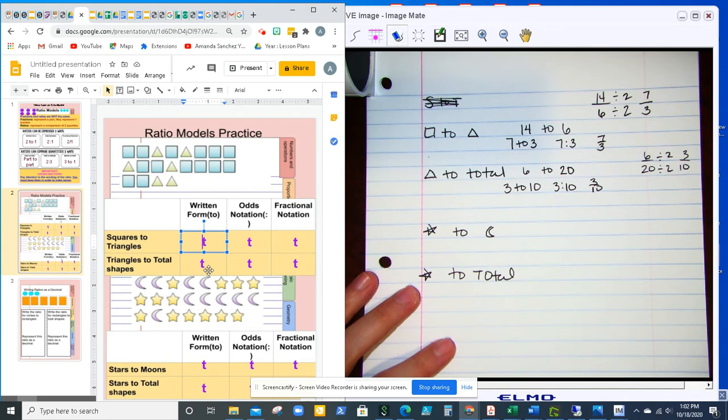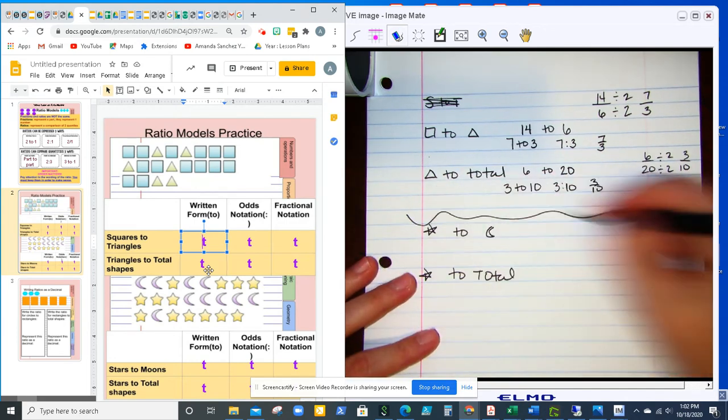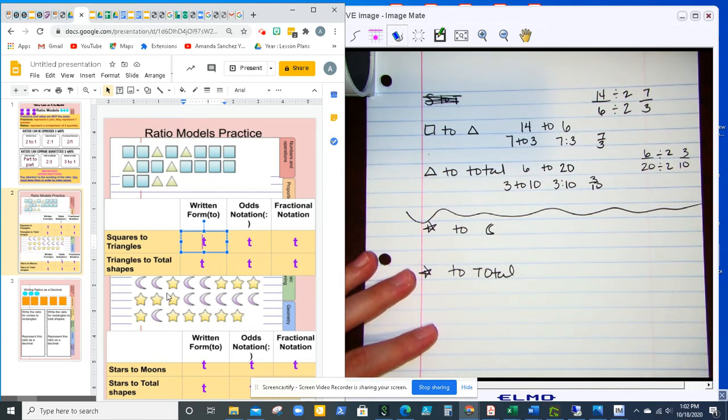The last one, comparing the moons and the stars. So there are how many stars? Counting them up, that's 13 stars.